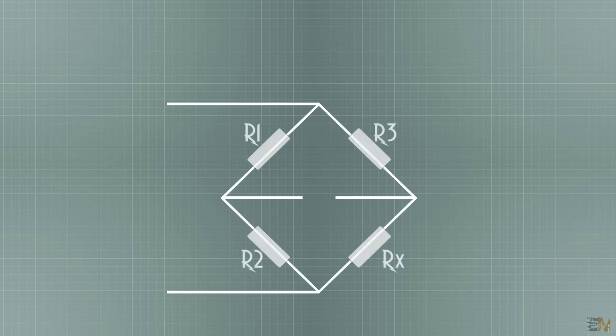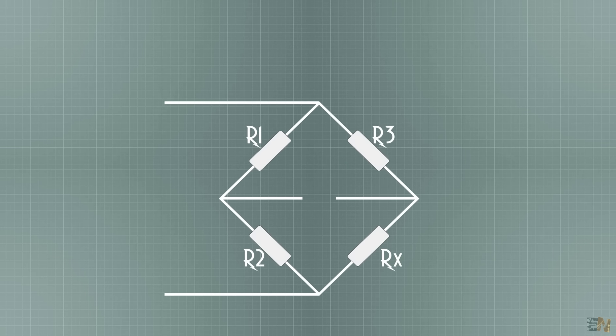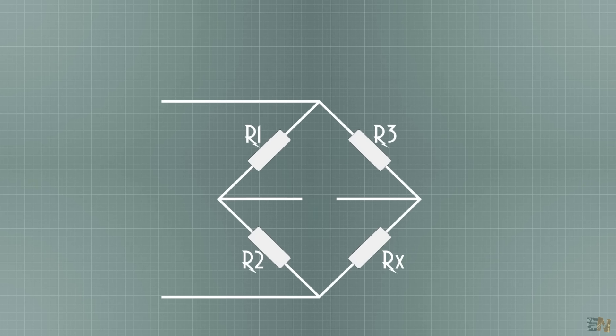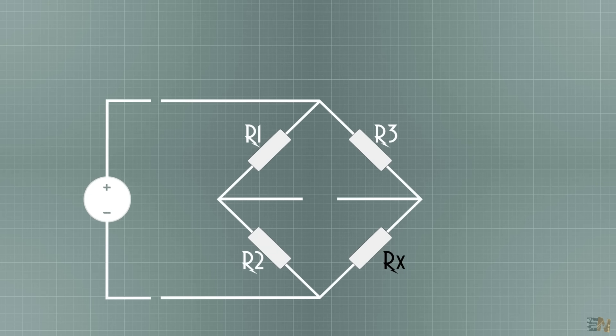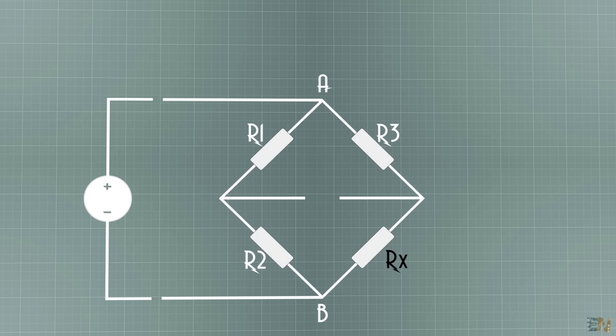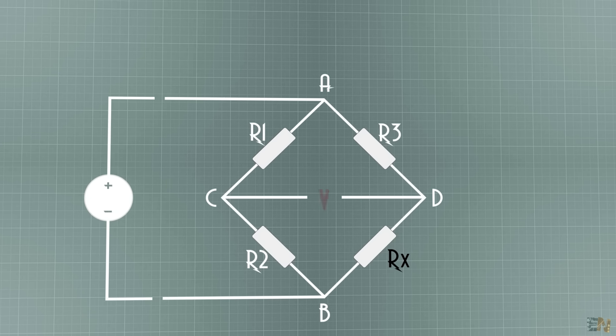This is the configuration of this bridge. We have 4 resistors in the shape of a diamond. We know the value of 3 resistors, but the fourth one is unknown. The supply voltage is connected to points A and B and between points C and D, we will later measure the voltage drop, so we need a voltmeter.